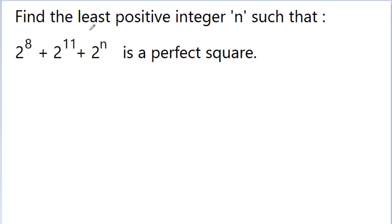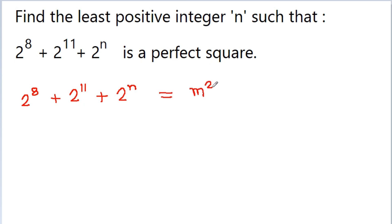In this video, we have to find the least positive integer n such that 2 to the power 8 plus 2 to the power 11 plus 2 to the power n is a perfect square. So here we have 2 to the power 8 plus 2 to the power 11 plus 2 to the power n, and since it is a perfect square, we can write it as m squared where m is any positive integer. Now we have to solve this equation and find the value of n.